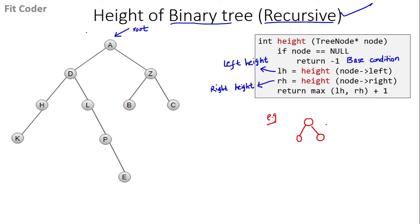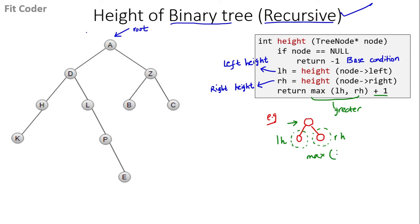Consider a small example tree with only 3 nodes. The height of this tree equals the height of the left subtree (LH) and the right subtree (RH), plus 1. The max function gives us the greater of LH and RH, and we add 1 for the root node of that subtree. We apply this formula recursively for each subtree, working upward until we obtain the height of the root, which is the height of the tree.